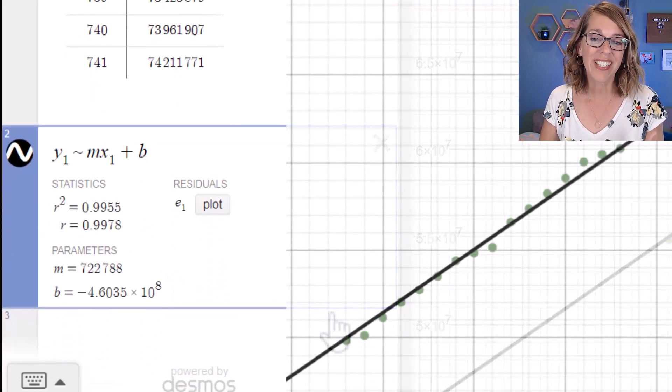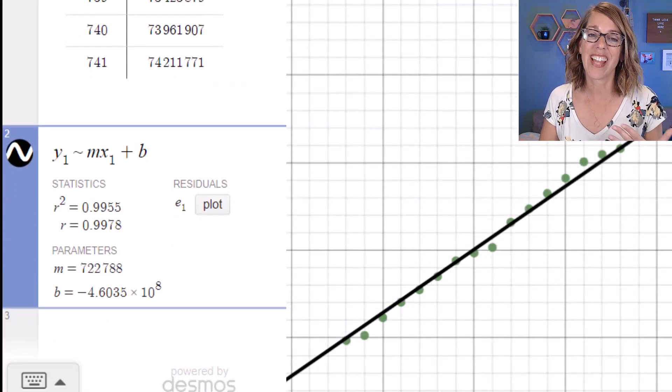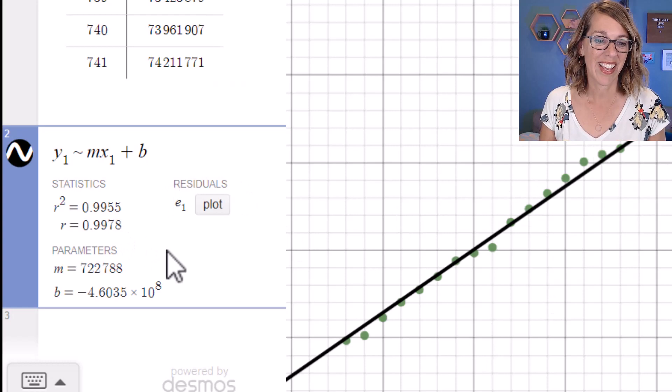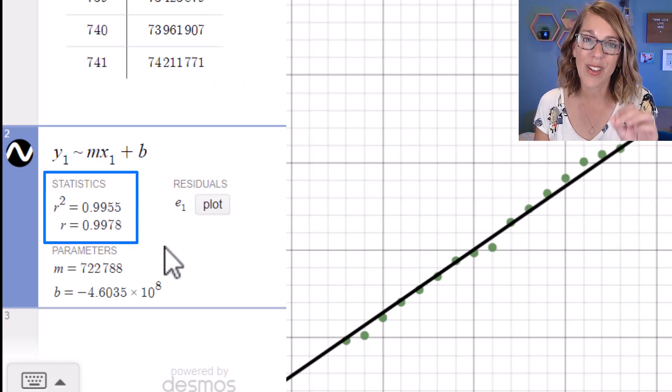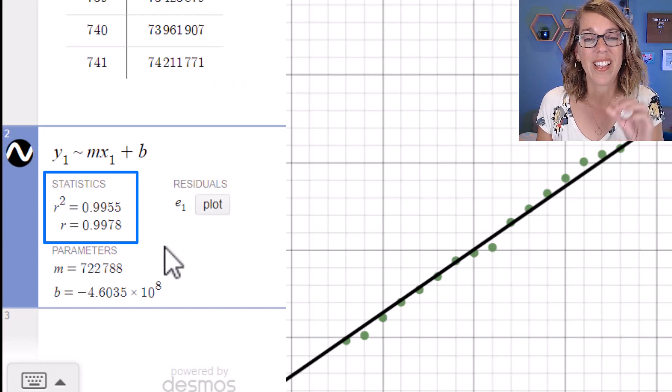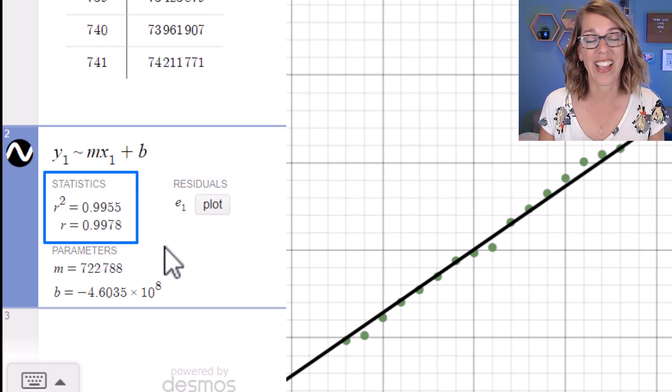So now I've got some really great information, including this nicely fit line. I've got an r value of 0.9978. The closer that value is to 1, the better this line fits your data. So 0.9978 is a really great r value or correlation coefficient.